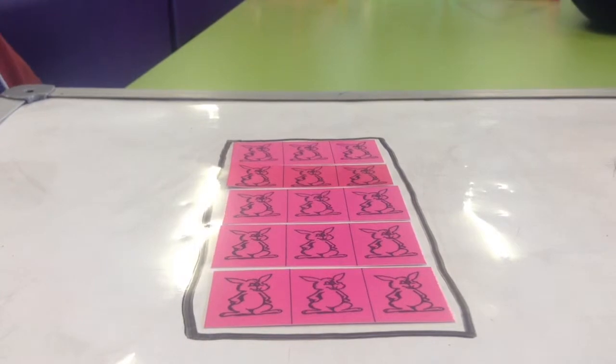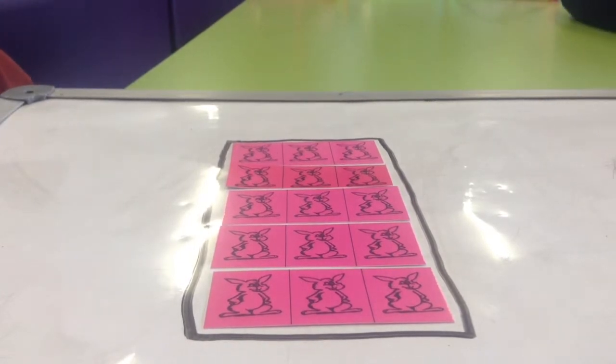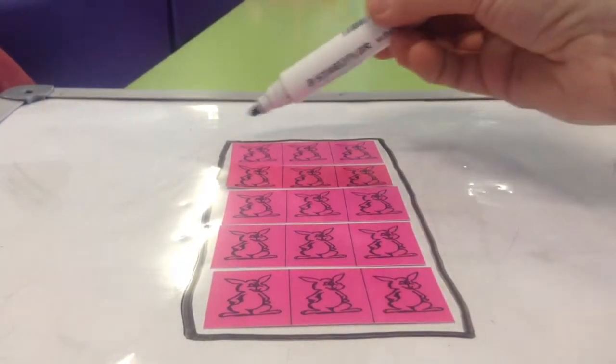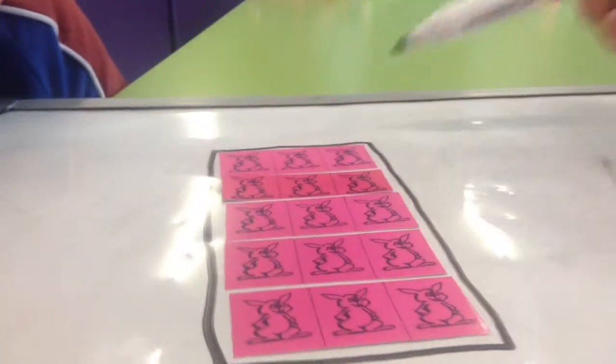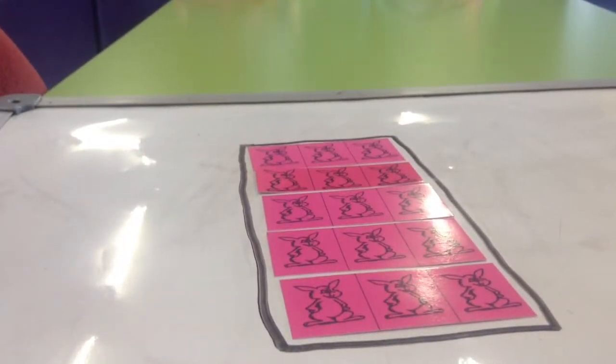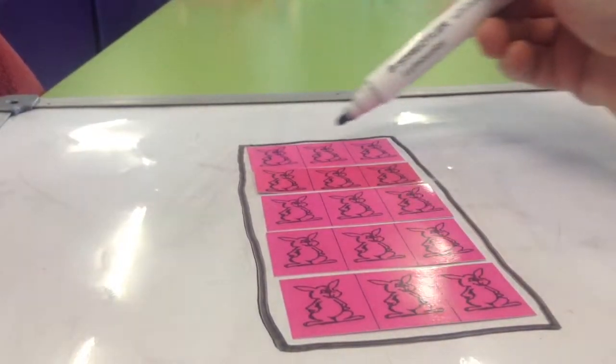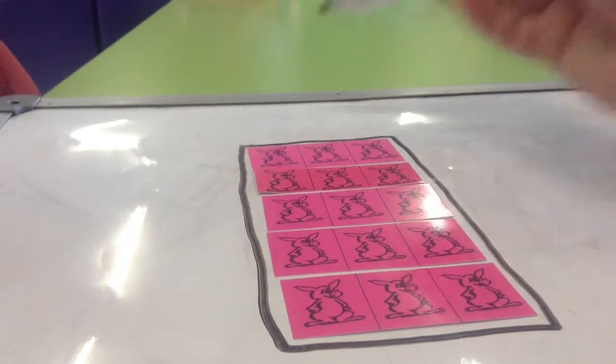Zelis, can you tell me how many bunnies go across? How many bunnies are there across that way? Across. How many bunnies are just across there? Three. How many bunnies are across there? Three. Three. Okay.